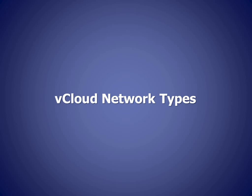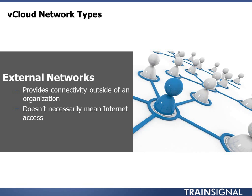Let's move into the various different types of networks available in vCloud and go over how they work, what they do, and some real-world cases where you may want to use one over another. To start with, we have external networks. If you think about cars on a racetrack just going round and round in a circle — think of that as the vCloud environment. Everything is contained within that racetrack. The external network is how you get out of the racetrack.